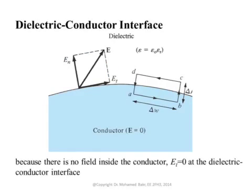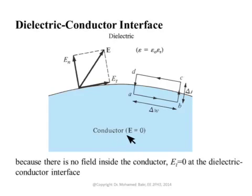In the previous slides we considered the case where we had an interface between two dielectrics, but what will happen if we have an interface between a perfect conductor and a dielectric? A perfect conductor means that the conductivity is infinite, and when the conductivity is infinite, the electric field is zero. A conductor, by contrast, has high but not infinite conductivity, so the electric field will not be exactly zero.